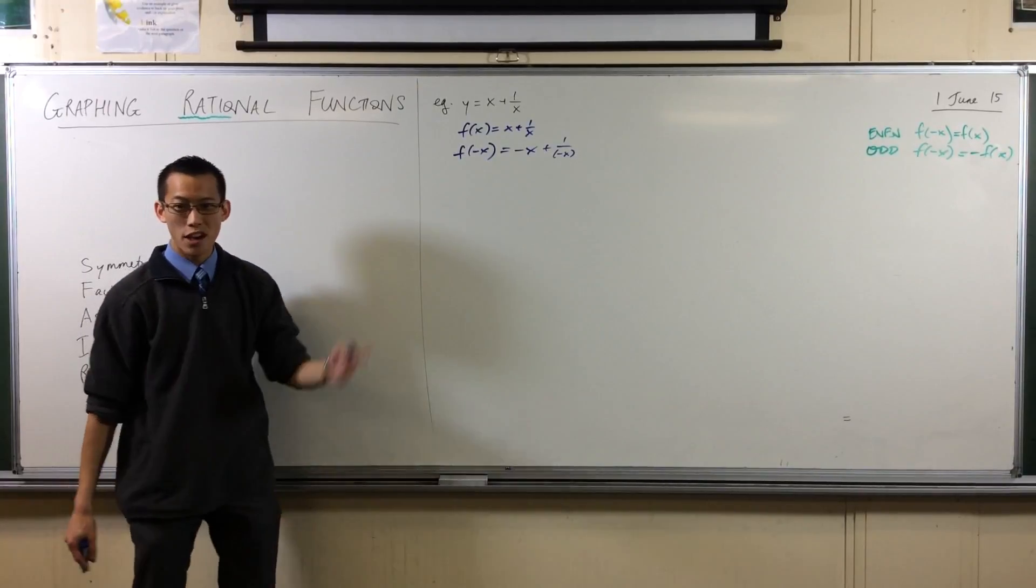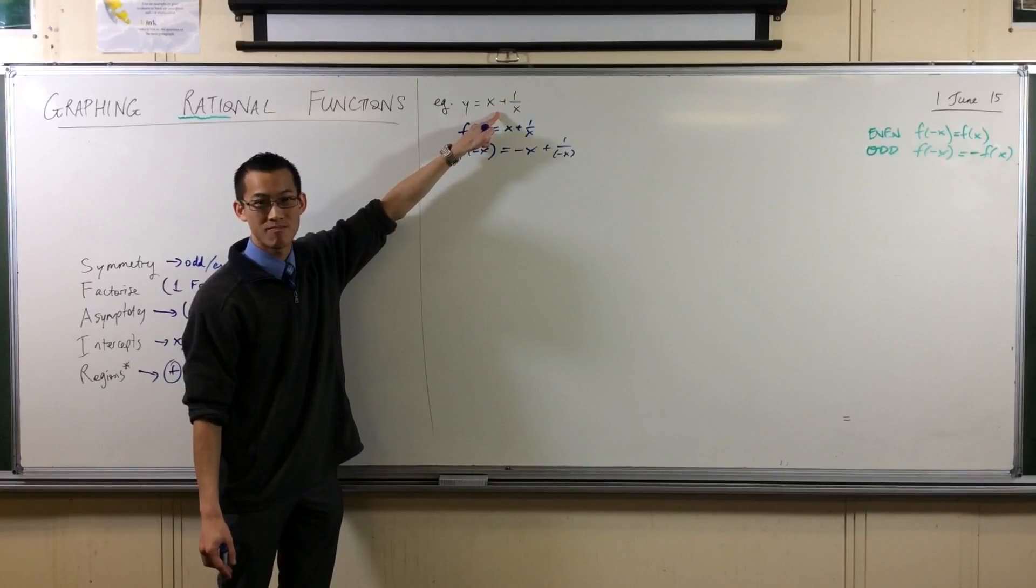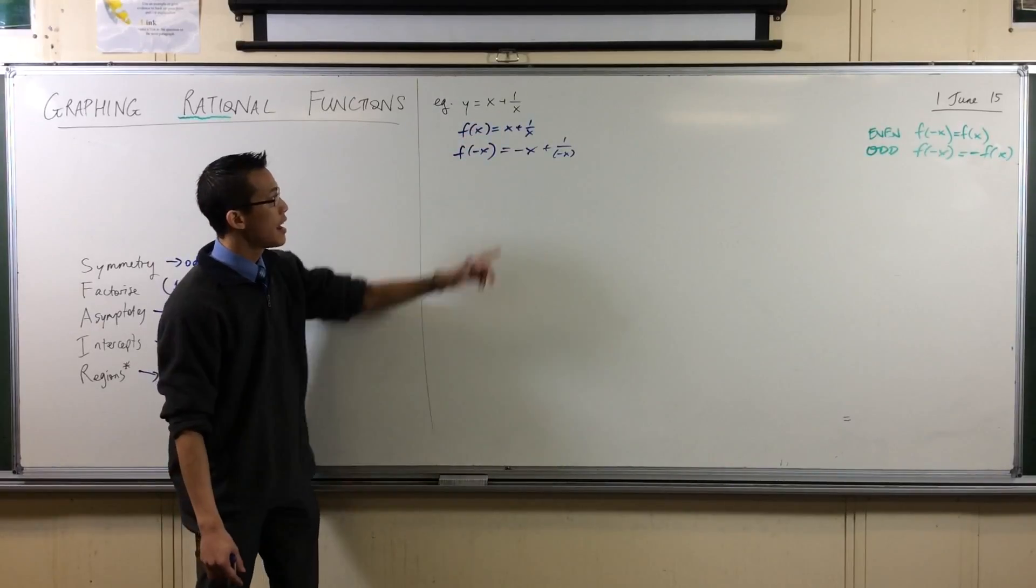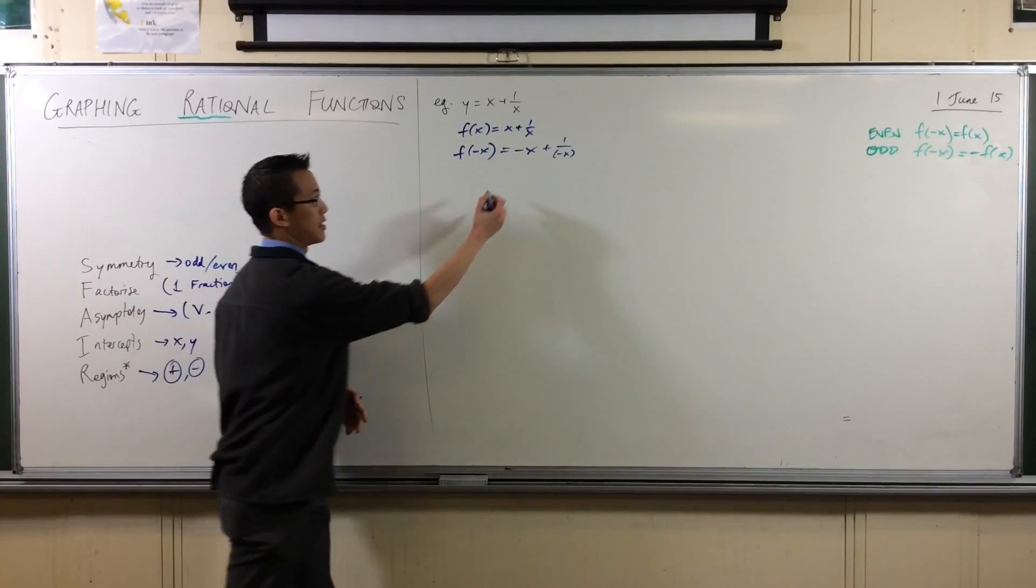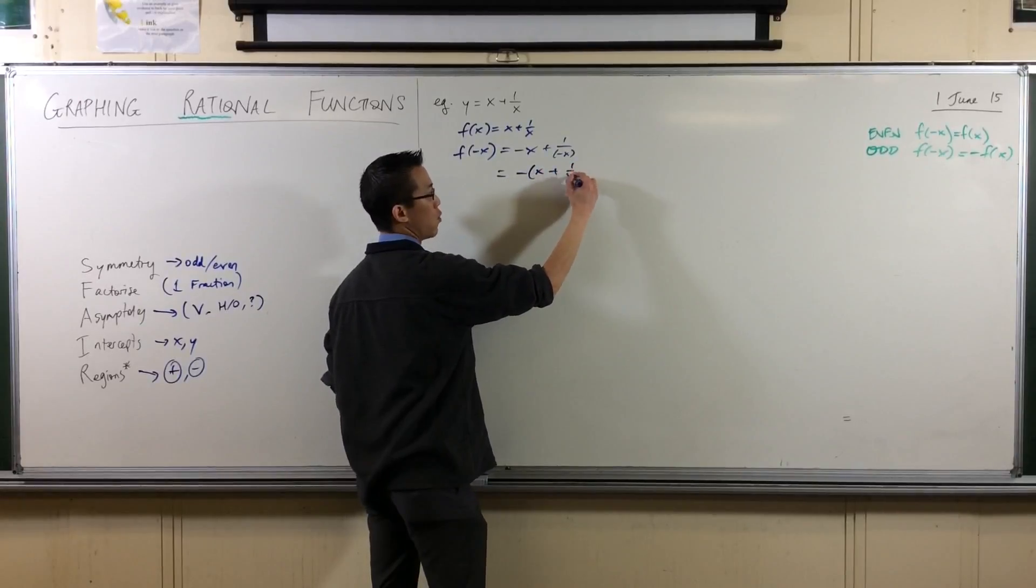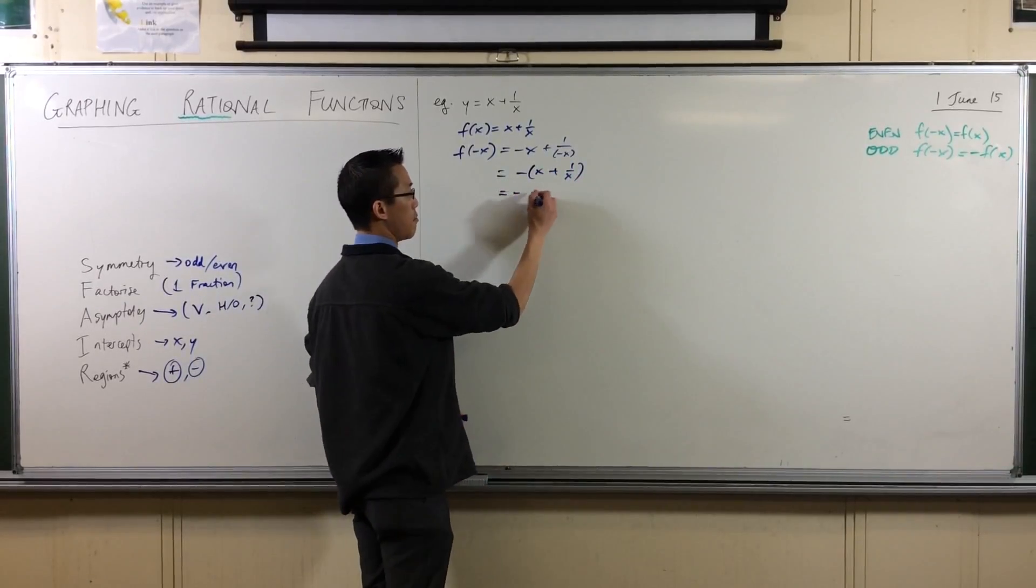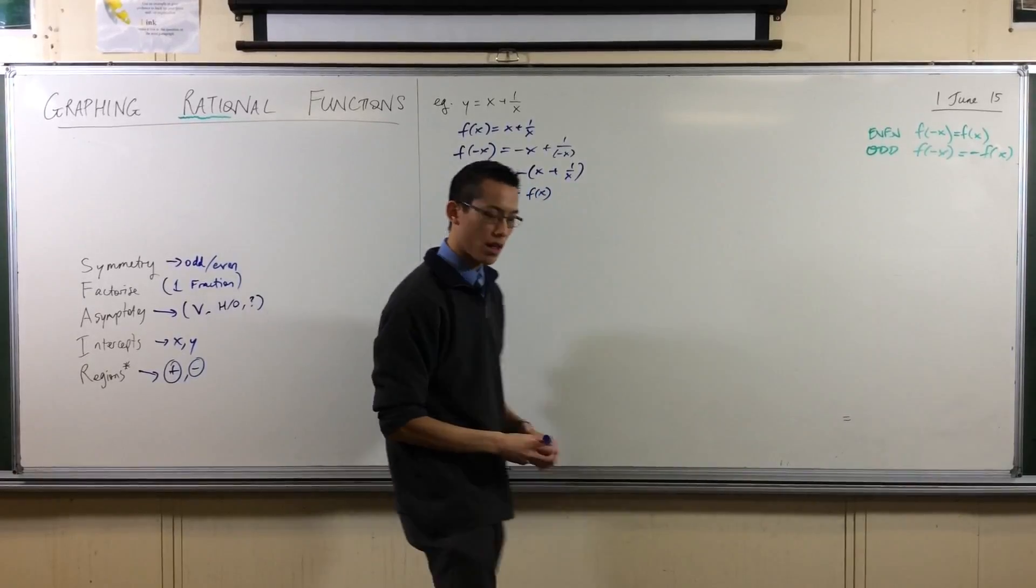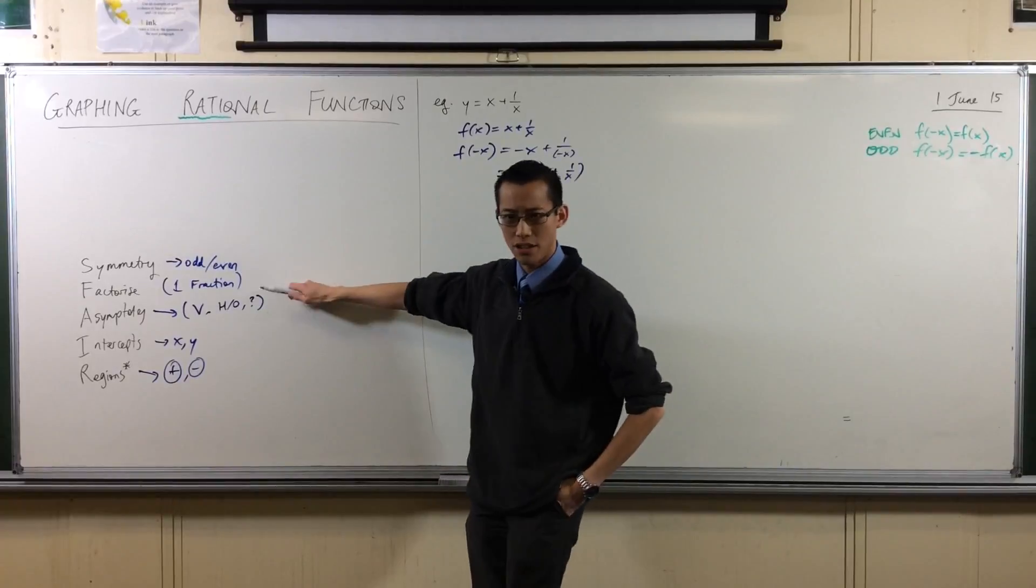I'm looking for either one of these happening. In order to see whether the first one happens, is this exactly the same as this? And the answer is no, so it's not even. Now, is this equal to negative of that? And just to make it super obvious, I'm going to take out that negative as a factor. So you're going to get X plus 1 on X, so it's odd. See that? That's minus F of X.